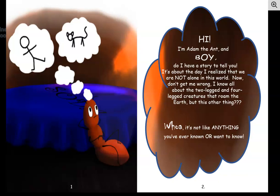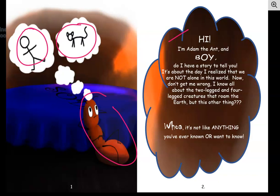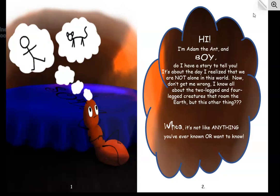So we're going to jump right into it. Try to follow along as best you can. It says, "Hi, I'm Adam the Ant, and boy, do I have a story to tell you. It's about the day I realized that we are not alone in this world. Don't get me wrong, I know all about the two-legged and four-legged creatures that roam the Earth. But this other thing? Whoa! It's not like anything you've ever known or want to know." So it looks like Adam is thinking about the two-legged and four-legged creatures. Do you know who or what those could be?